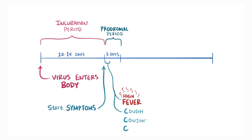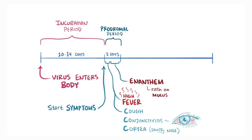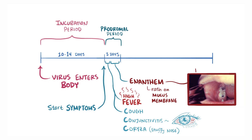The three C's are: cough; conjunctivitis, or inflammation and redness of the white part of the eye; and coryza, swelling in the mucous membrane of the nose — essentially a stuffy nose. One to two days later comes the enanthem, which is a rash in the mucous membranes that looks like salt grains on a wet background. These are called Koplik spots — small white spots commonly seen on the inside of the cheeks opposite the molars.